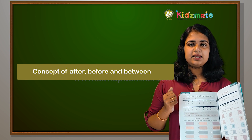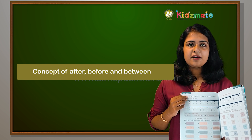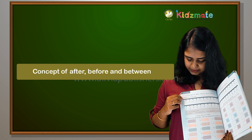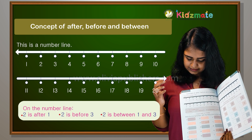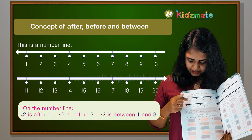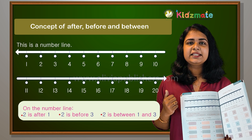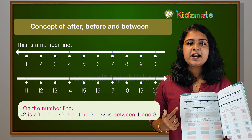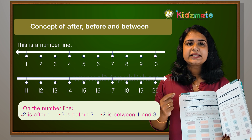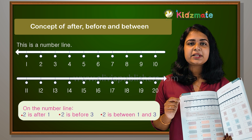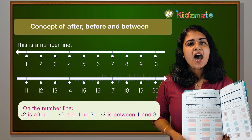After. For example, this is a number line. If you look at this — two. You have one. Two is after one. After one, the answer is two.